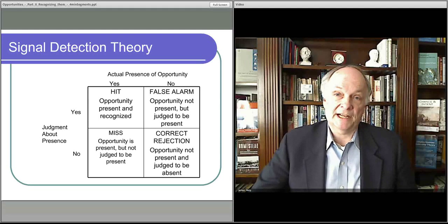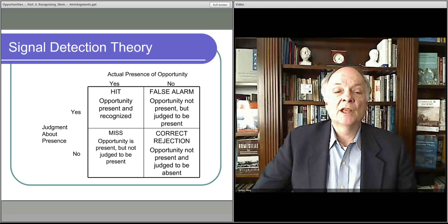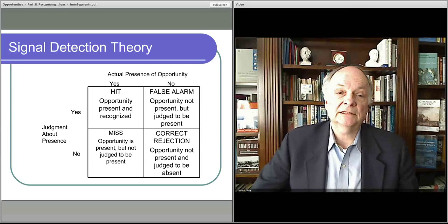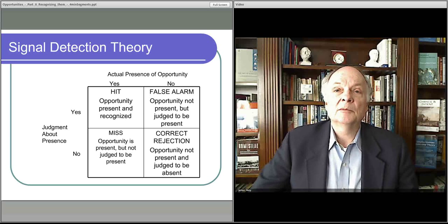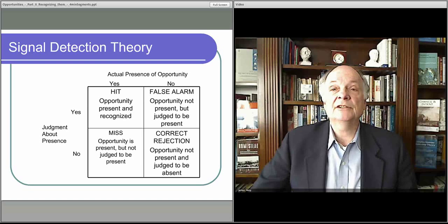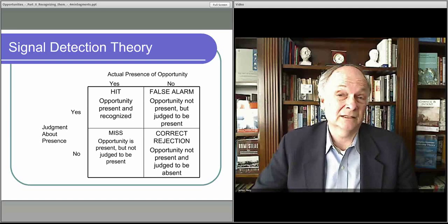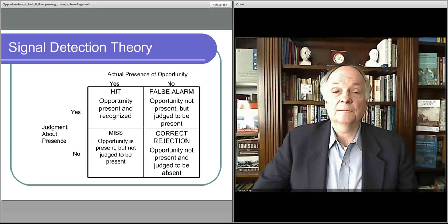So the other two boxes are where the action is. On the one hand, you have a situation where you think there's an opportunity, that's the top row, but it's really not there. In other words, it's a false alarm. You spend a lot of energy and time working on a business idea that turns out to not really exist. That's the false alarm box.